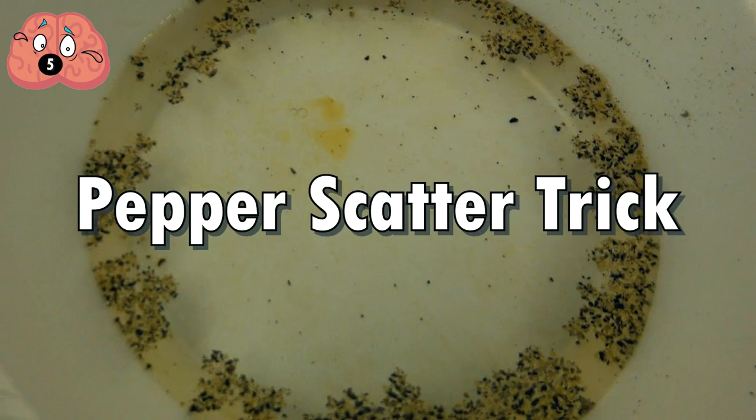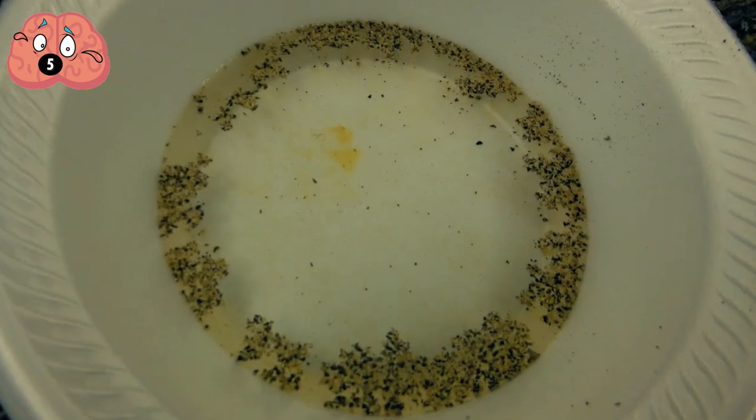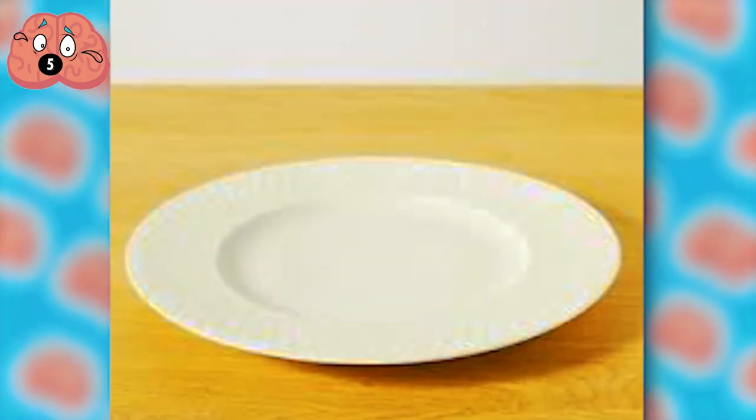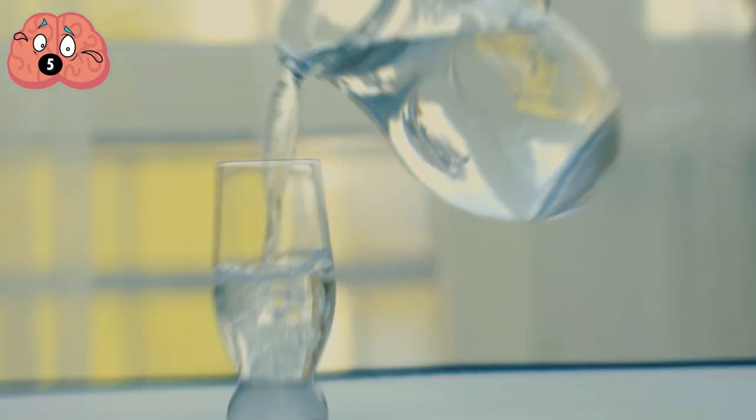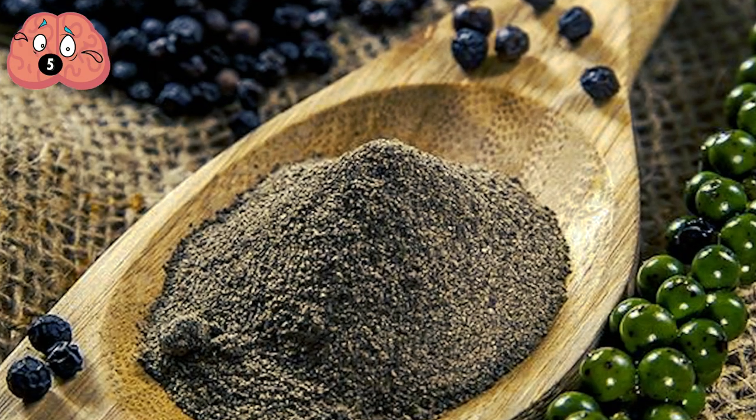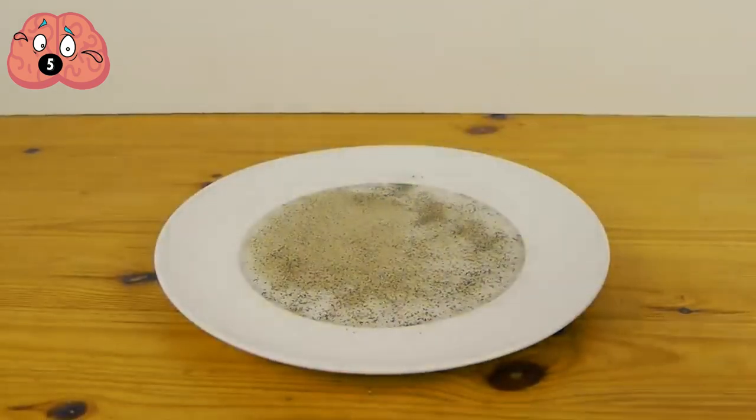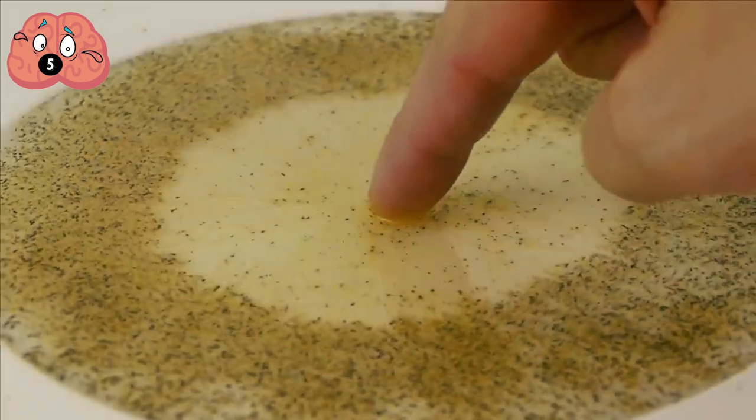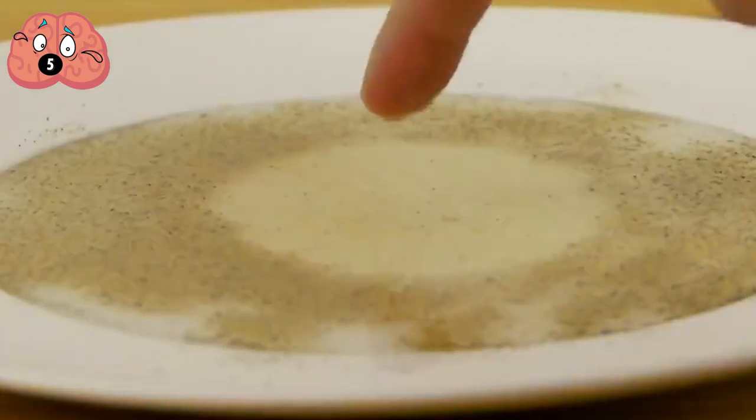Number 5. Pepper Scatter Trick. If you want to fool your friends into thinking you have magical powers, perform the pepper scatter trick. It's easy to do, but the results are very noticeable. What you need is a shallow dinner plate, just enough water to cover it, ground black pepper, and your secret weapon: detergent. Pour the water until it spreads throughout the plate. Sprinkle ground pepper onto the water, and then have one of your friends dip a finger into the water. Nothing happens, right? This time, you do it, but discreetly coat your fingertip in detergent first, and then touch the water. The pepper scatters away.